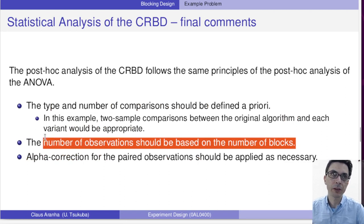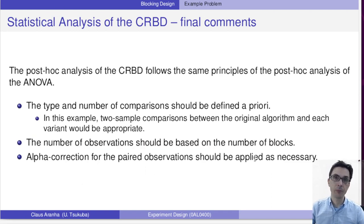The number of observations is based on the number of blocks. So here, the number of observations that we use for our statistics, for calculating power, etc., is the number of blocks. Alpha correction of the pair observations is also applied as necessary, also based on the number of blocks.